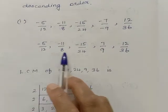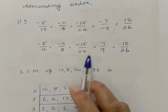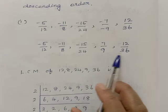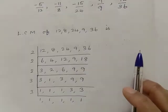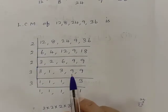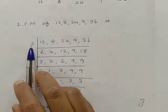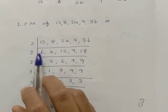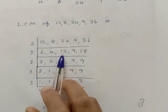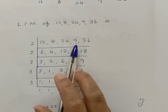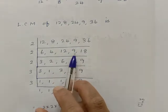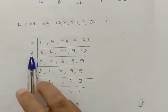LCM of 12, 8, 24, 9, 36. By the 2 times table: 6 twos are 12, 4 twos are 8, 12 twos are 24, 9 is not possible so we write 9, and 18 twos are 36.